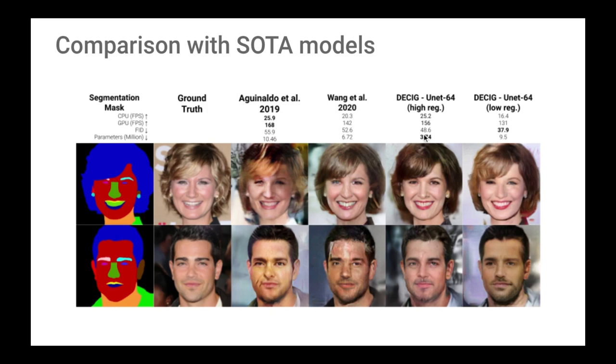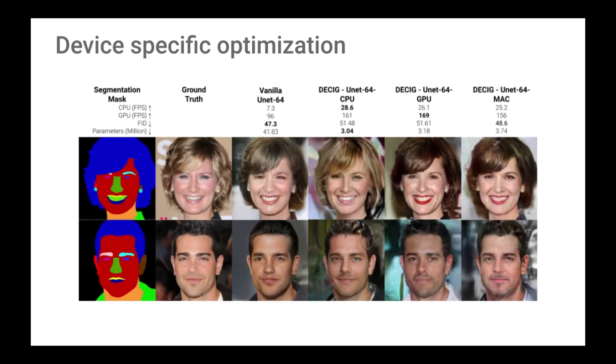Also, FID scores of our model are slightly better and the low reg version gives better FIDs compared to all other models. From quantitative results, it is observed that inference time for model optimized for a particular device shows improvement compared to model optimized using general approach. For example, model optimized specifically for CPU has faster inference time on CPU compared to the model optimized for GPU, whereas the model optimized for CPU has higher runtime on GPU compared to a model optimized specifically for GPU.